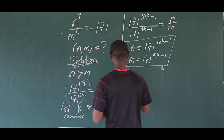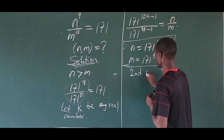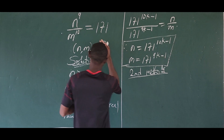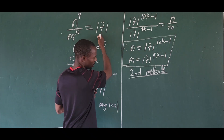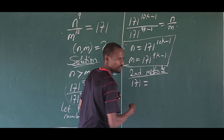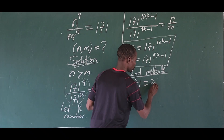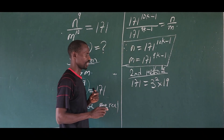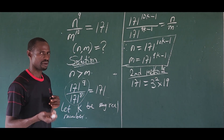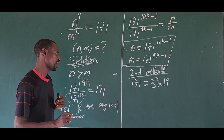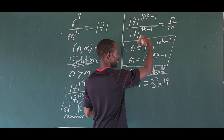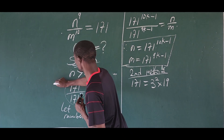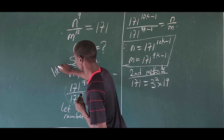Now the second method. 171 can be split into 3 to the power of 2 times 19. So this factorization gives us 171. The approach here is similar to the first one — let's take this as our first method and now move to the second method.